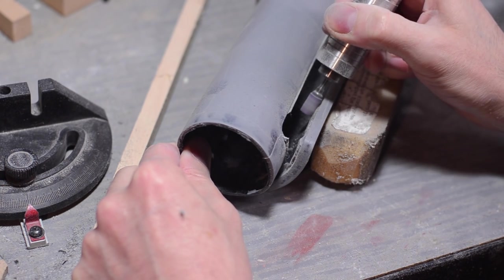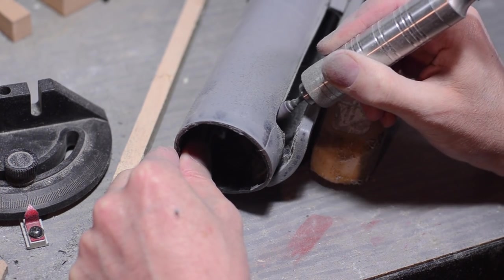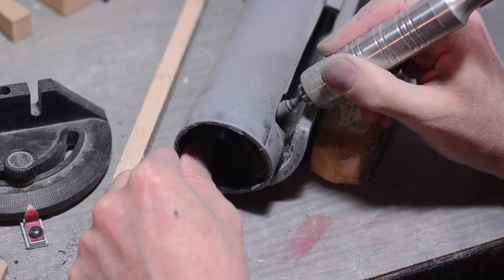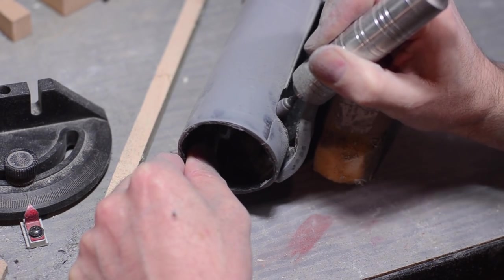For that I just used my rotary tool with a cutoff wheel to remove most of the material, then I went back in with a sanding bit to clean all of the edges up.